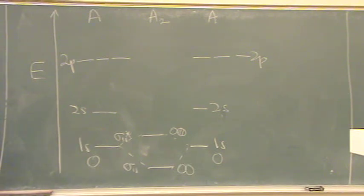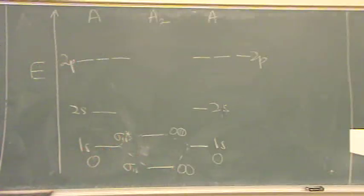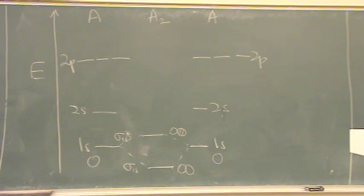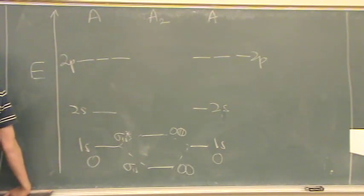And this anti-bonding, which is destructive interference. Bonding down here, which is constructive interference. Both the same shape. Okay. Again, I don't know the atom yet. It's still hidden in your mind.